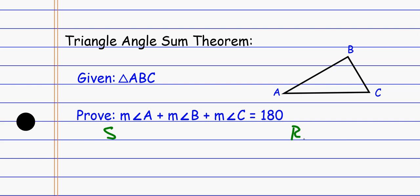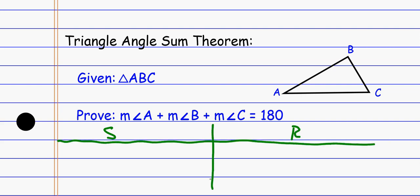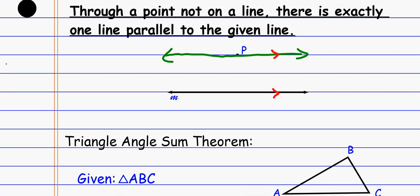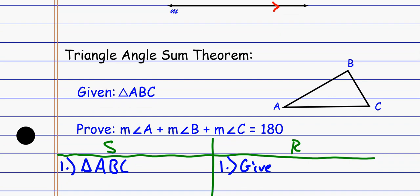Now we're going to prove it so that we have a justification for using it moving forward. Good old proof: statements and reasons. If you're looking at that picture thinking this thing looks pretty bare and you don't know how we're going to do this — I agree. Let's put down what I know: I have a triangle, that's given. This is one of those situations where we have to add something to the picture. And the thing I'm going to add — I'm going to use that parallel postulate we just talked about. Look at line AC, and point B is floating out in space.